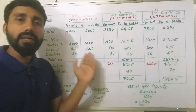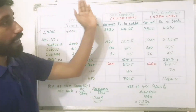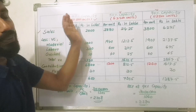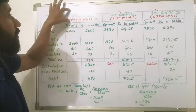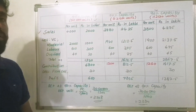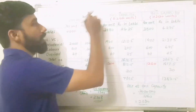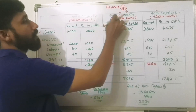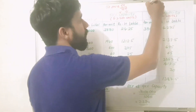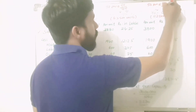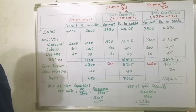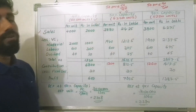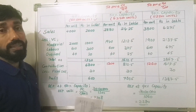We have to convert the data at 40% capacity. First, 40% capacity produces 50,000 units. We convert to 50% capacity: 50,000 × 50/40 = 62,500 units. We convert to 90% capacity: 50,000 × 90/40 = 1,12,500 units. We will now prepare a per unit sales and marginal cost statement.